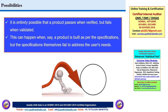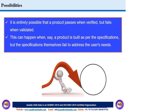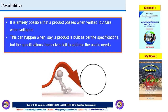Now let's talk about certain possibilities. There are always possibilities that a product may pass verification activities but fail in validation, and vice versa. For example, a product may pass dimensional verification, but when subjected to structural or endurance testing, it fails. The reverse can also occur.